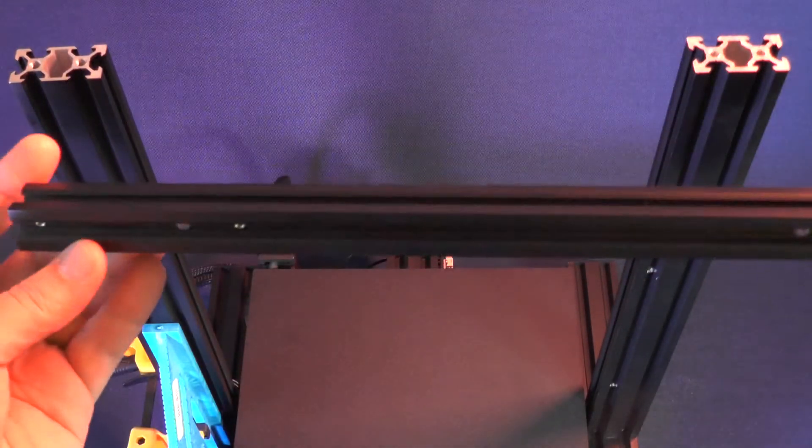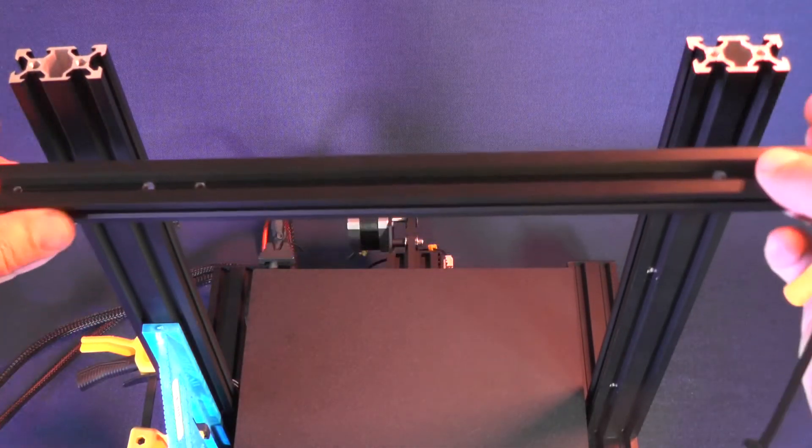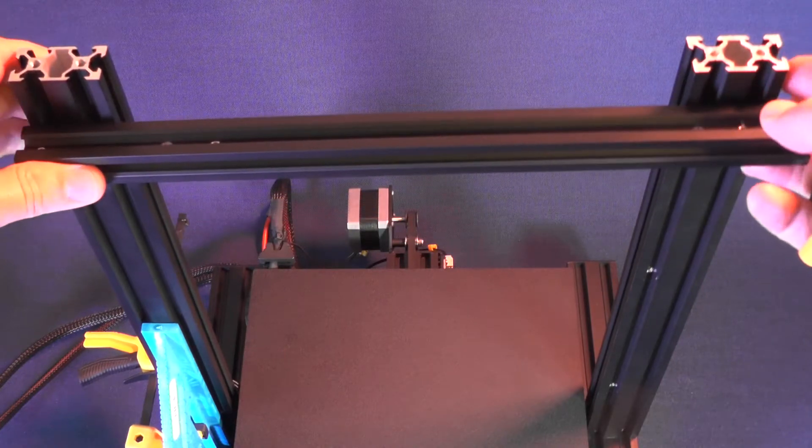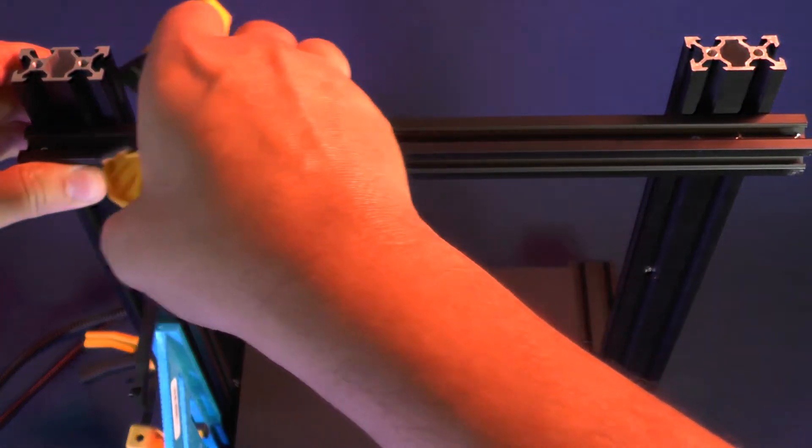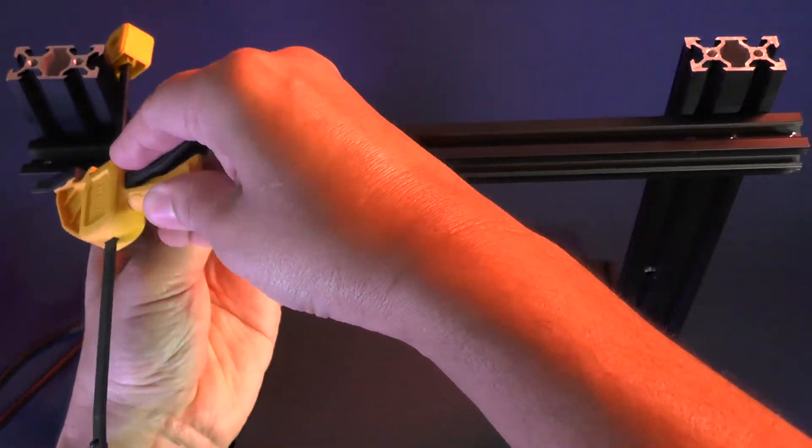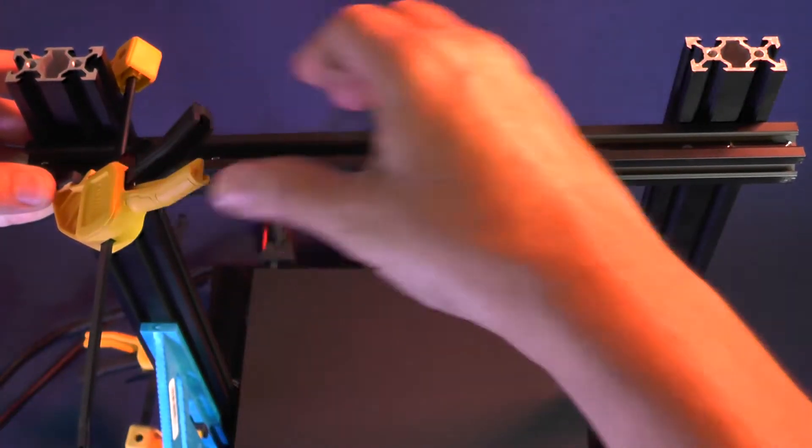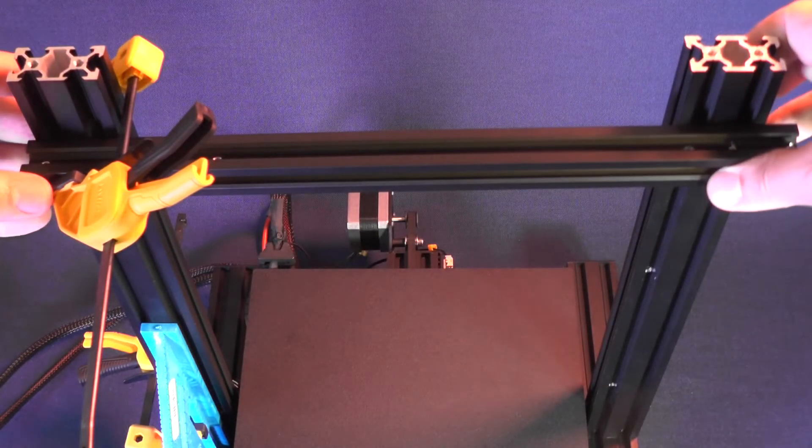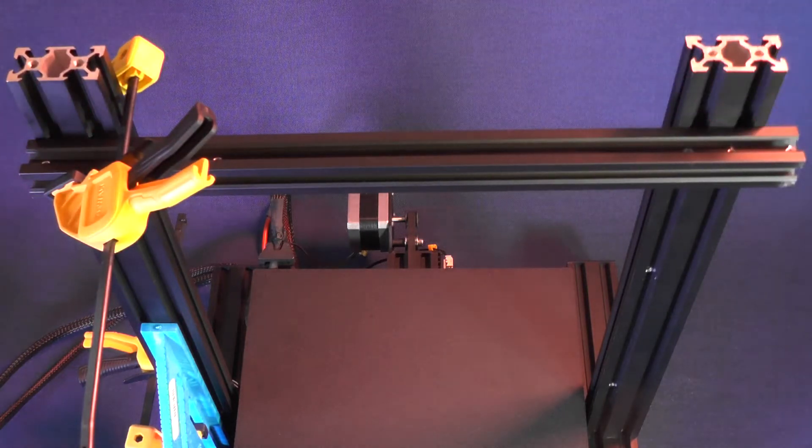Now, you pick up one of the 2020 aluminum extrusion and attach it to the 2040 aluminum extrusion that you are working on. This will help both 2040 aluminum extrusion to remain parallel to each other.